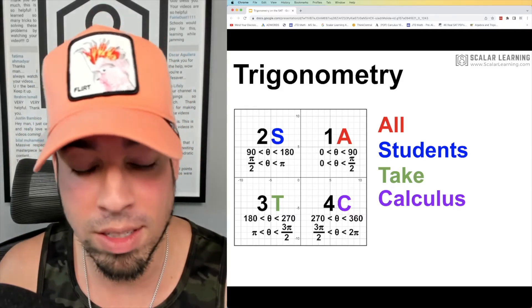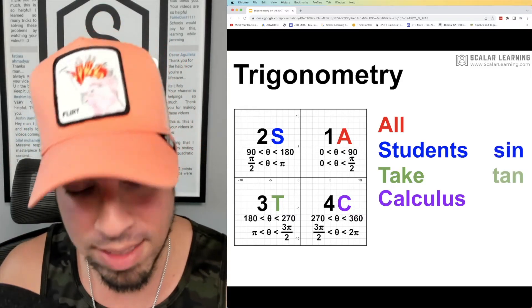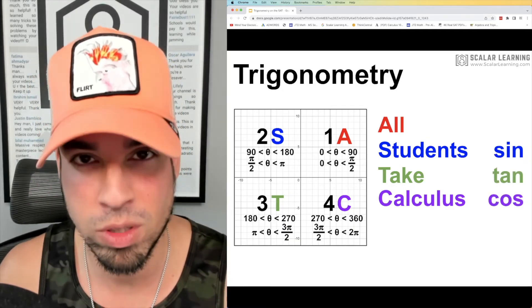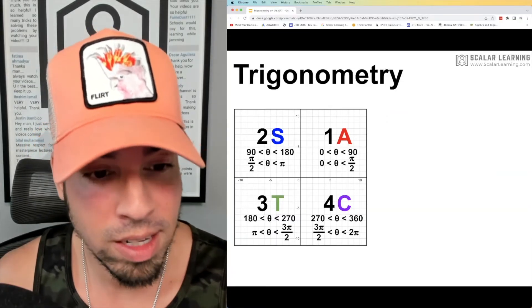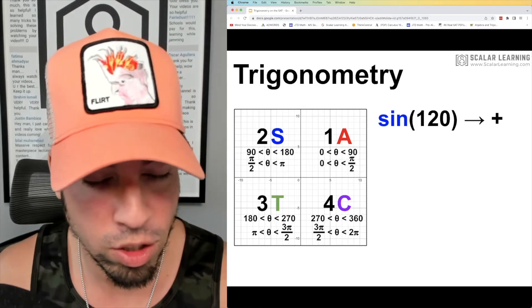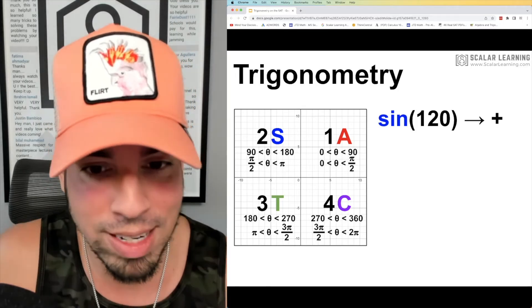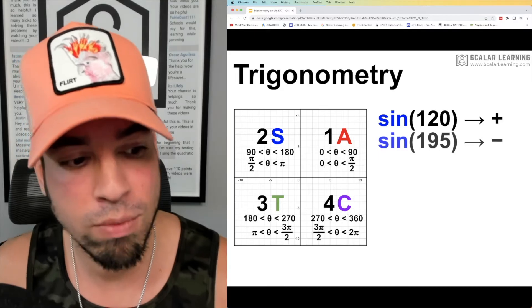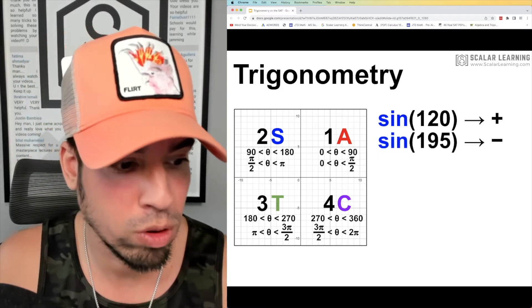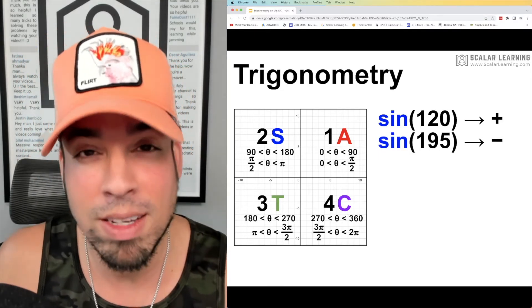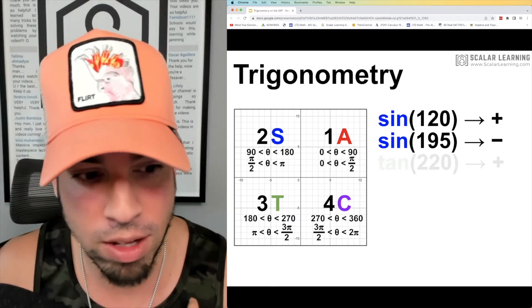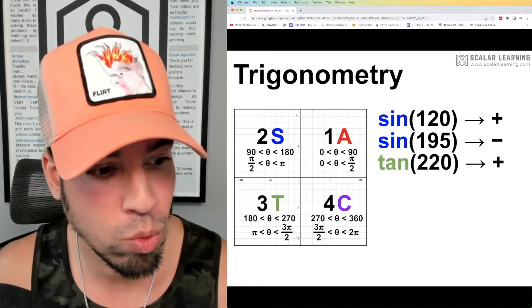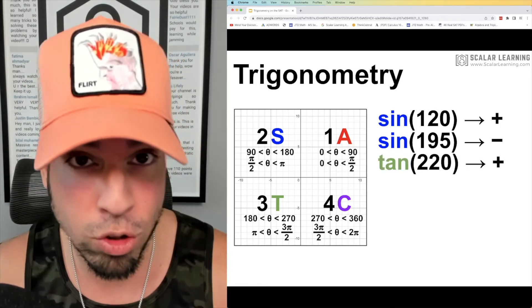So once again, Students syncs up with sine, Take—tangent, and Calculus—cosine. Now let's look at some concrete examples. For example, sine of 120 degrees—that'd be in quadrant two where sine is positive—that'll give us a positive value. Sine of 195—that's going to be quadrant three, between 180 and 270—that's going to give us a negative value.